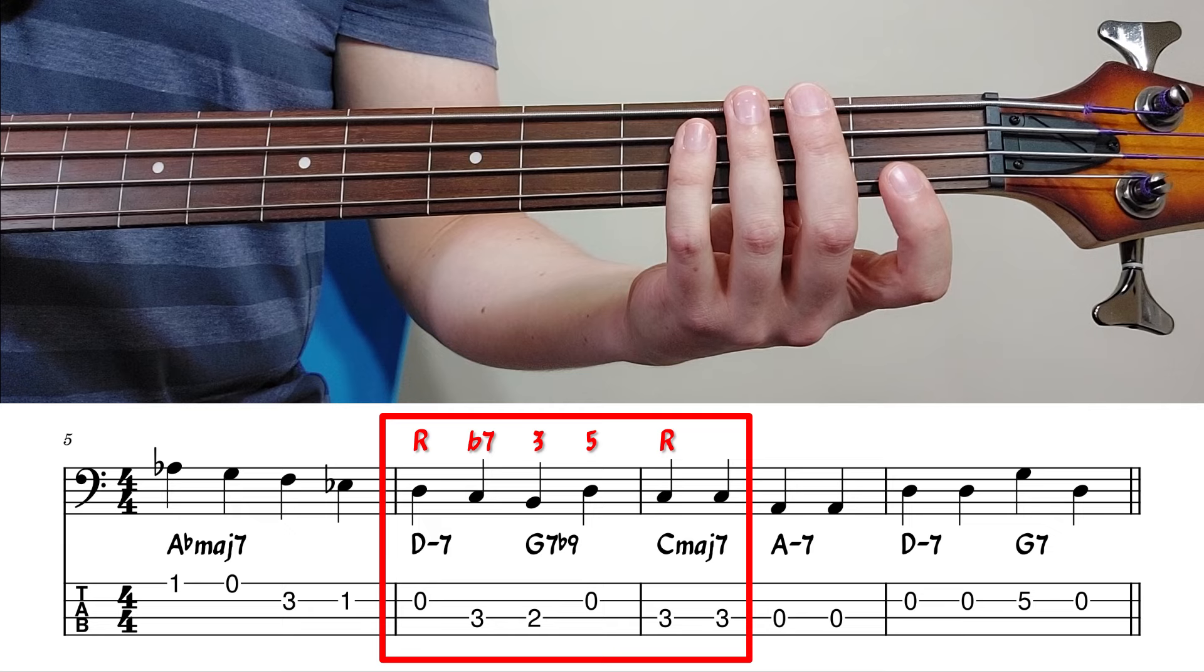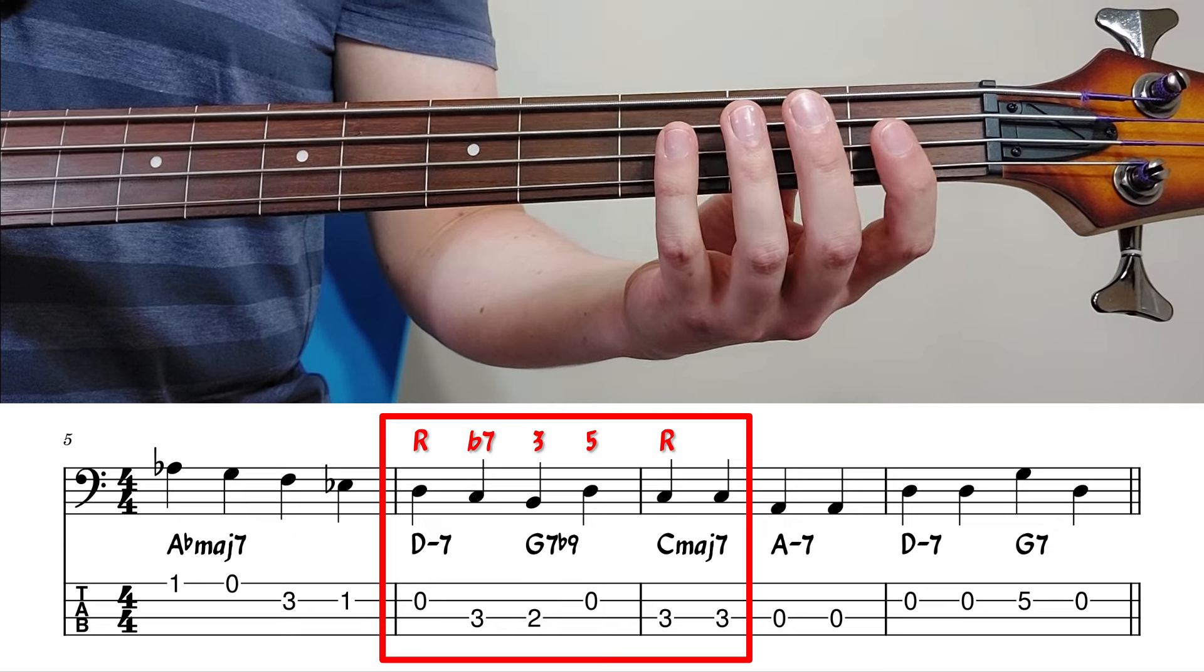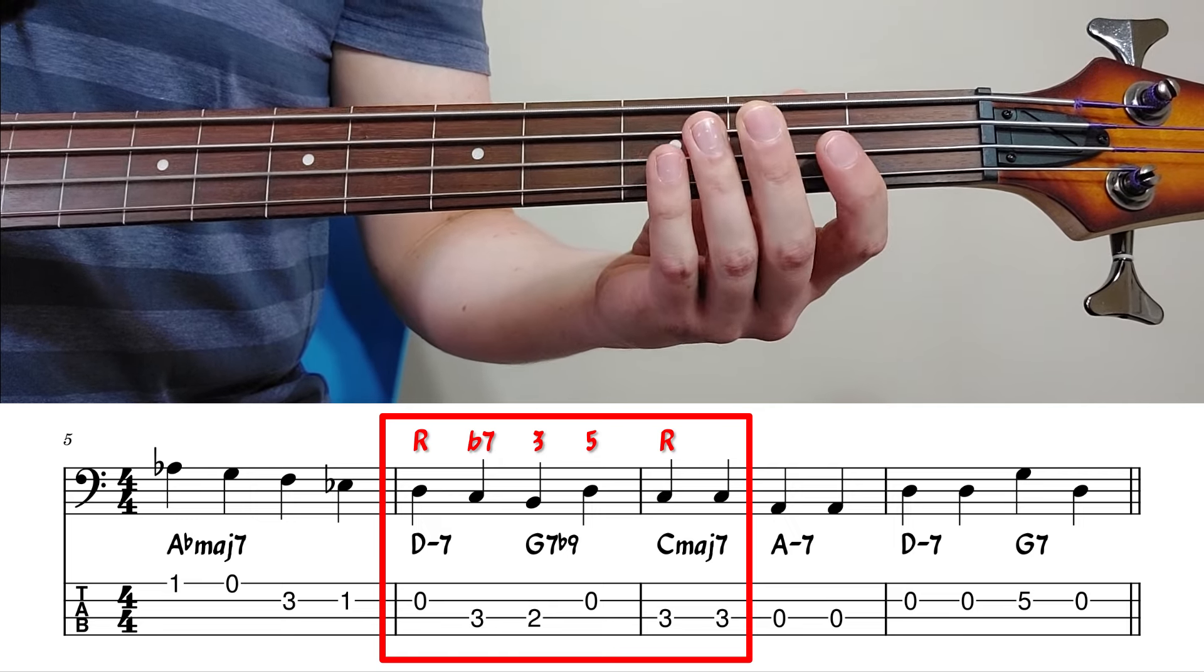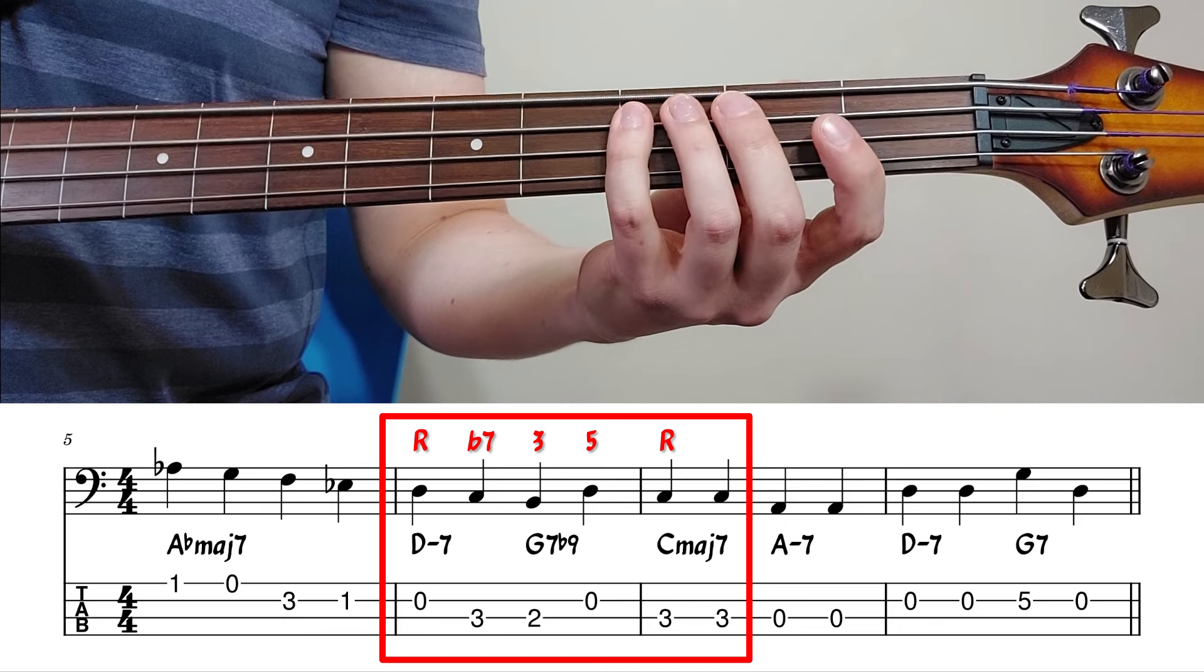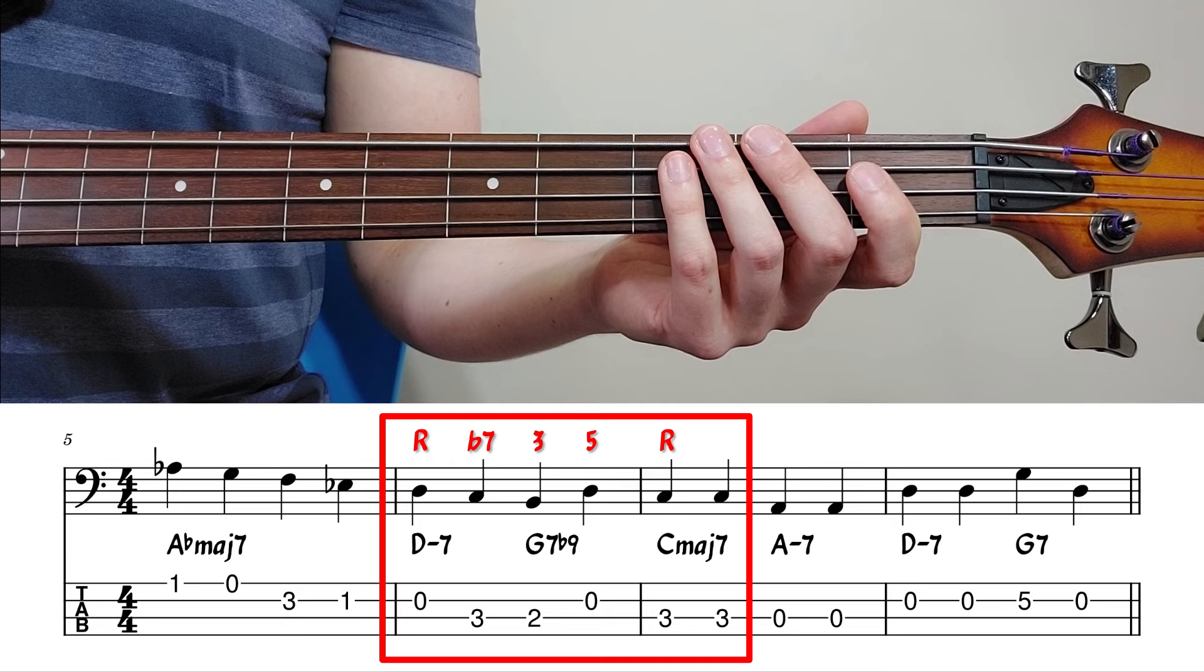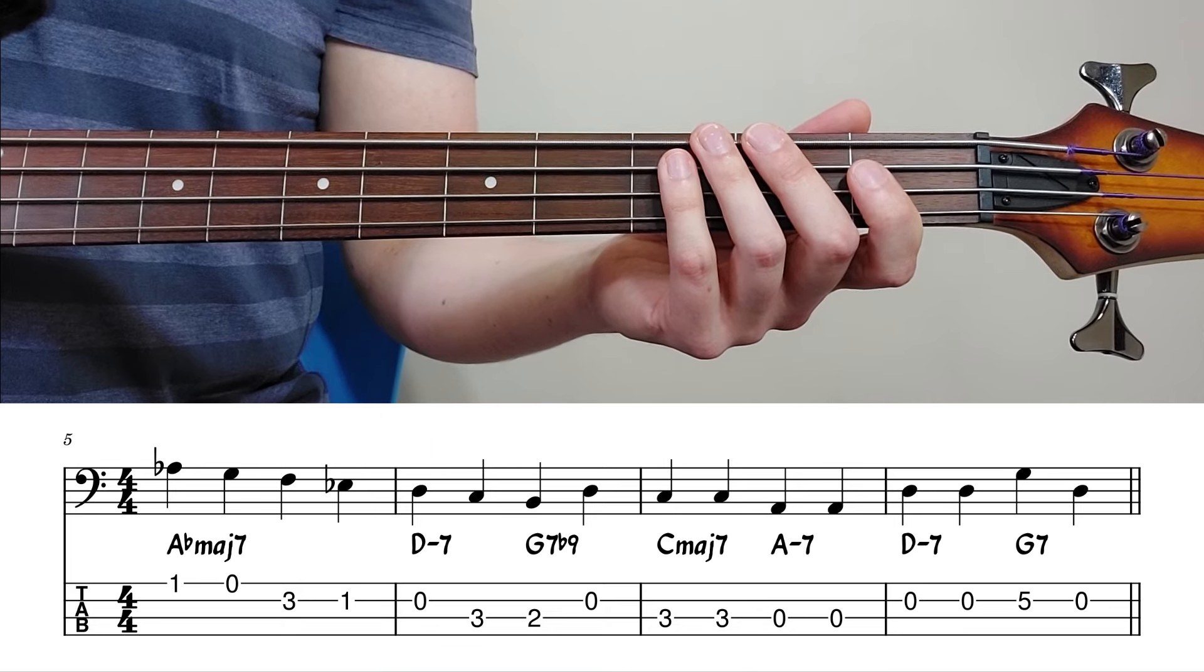And bringing us back to the starting key again, we're playing root of D minor 7, 7, major 3rd, 5th of G7, and then root again of C. For some extra practice, try applying some of these patterns to 2-5-1s in different keys.